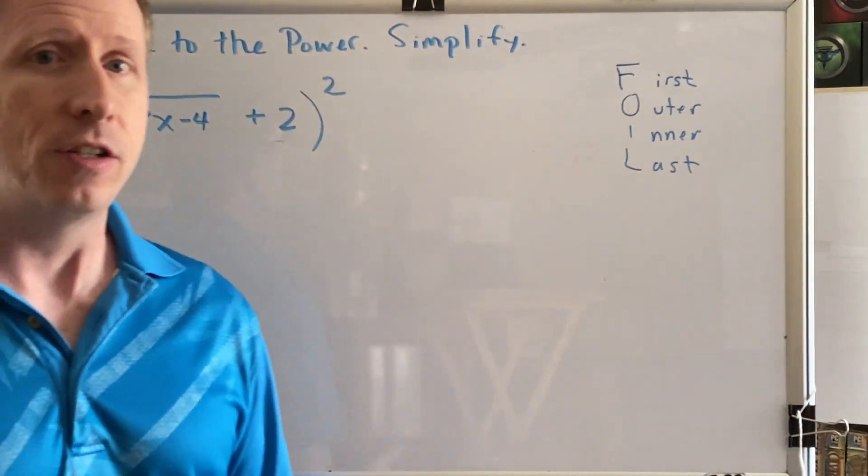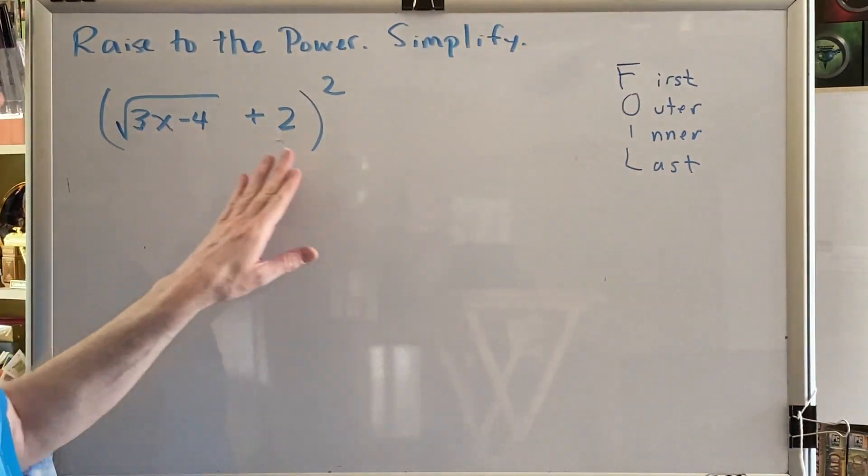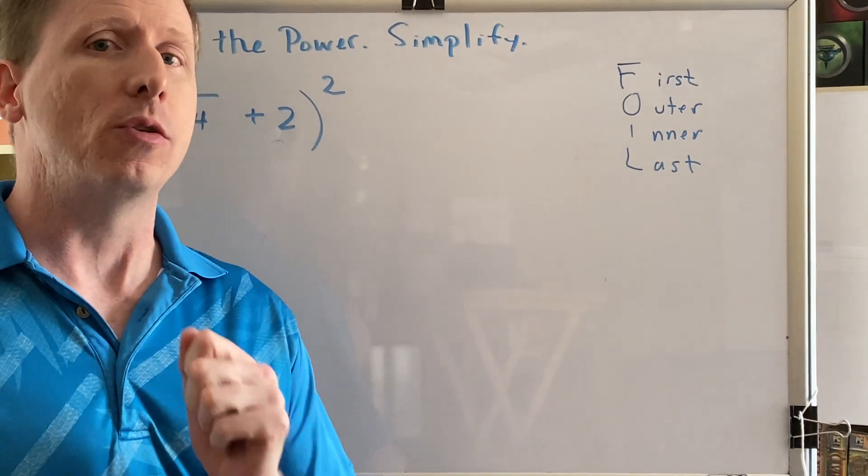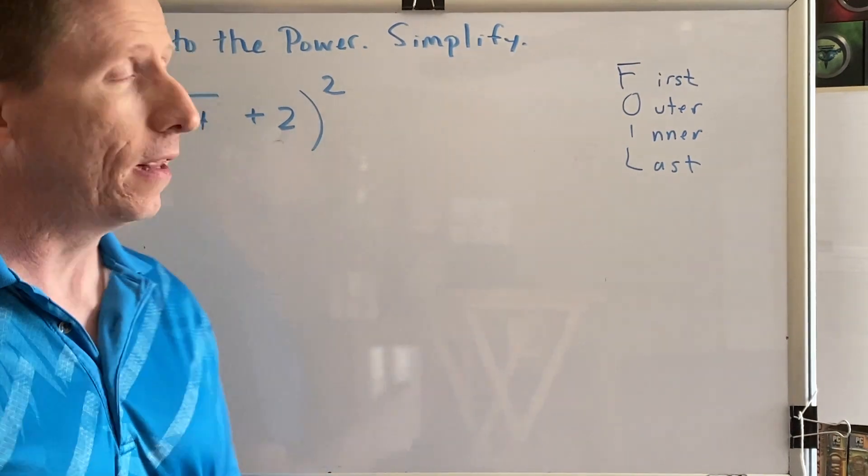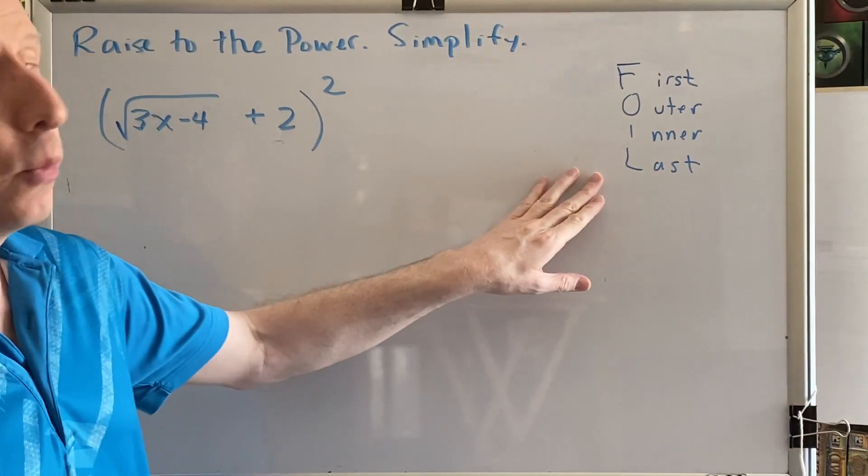Once again, we must pay attention to the symbol between the radical and the non-radical. If it's adding or subtracting, we need to use the FOIL multiplication method. In this case, it's adding, so we will use FOIL.